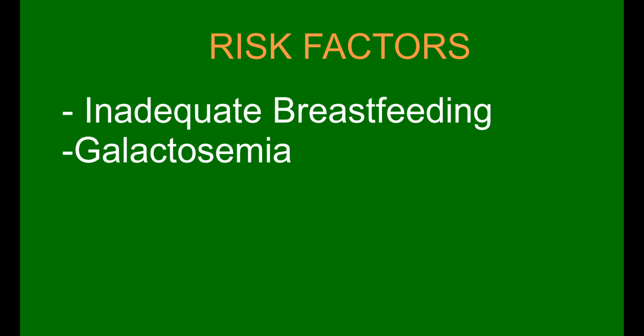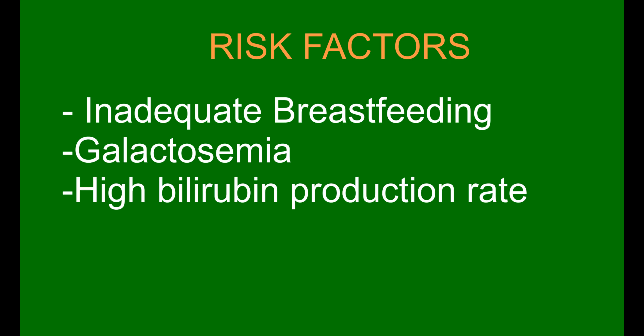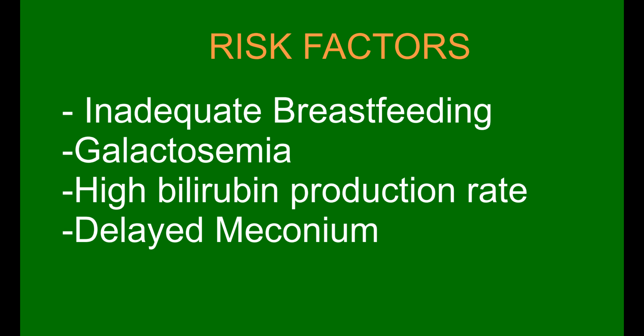Galactosemia occurs when the infant cannot metabolize galactose in breast milk, cow's milk and other sources. Increased rate of production of bilirubin is due to the short lifespan and higher concentration of red blood cells. Delayed meconium passage increases absorption of bilirubin in the intestines.